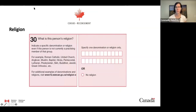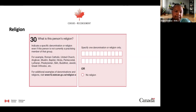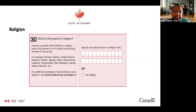Religion is not a new question — it has been around since 1871 — but it is not asked at every census, only every ten years. The last time it was asked was in 2011. A slight but important difference with previous cycles is that we will have more examples, up to 200 examples of religions and denominations, which will allow respondents to be more precise in terms of specific denominations.